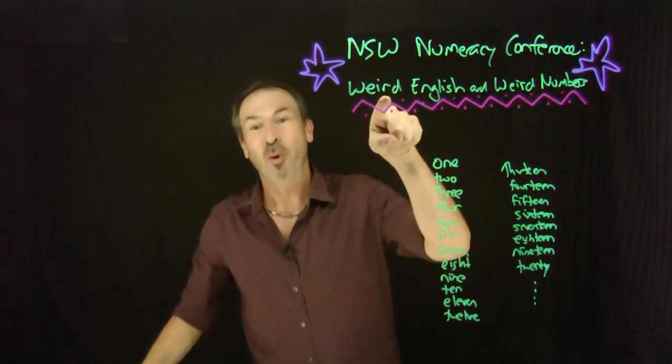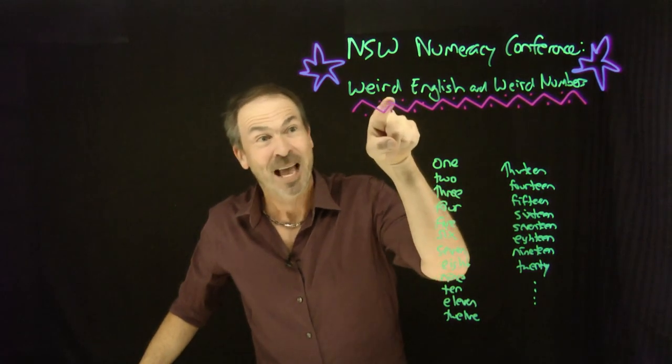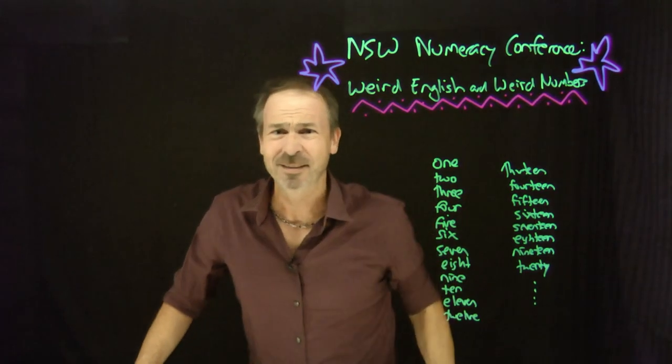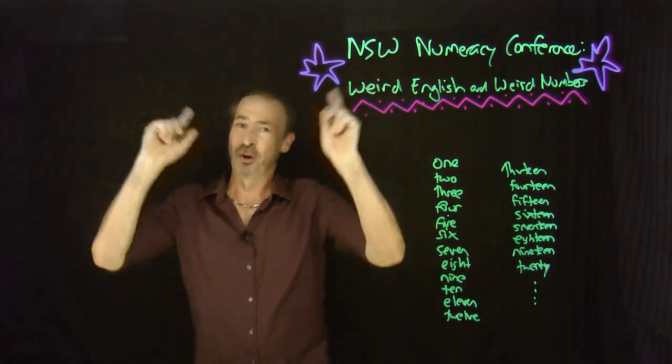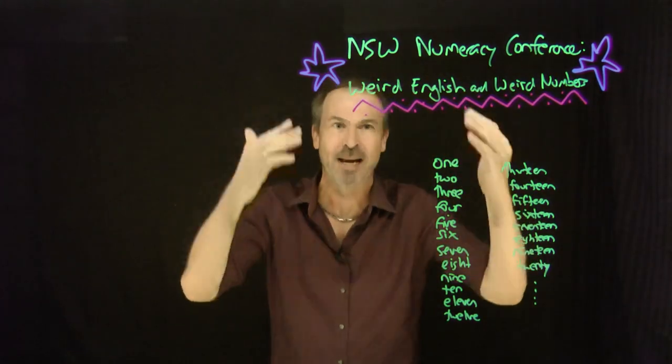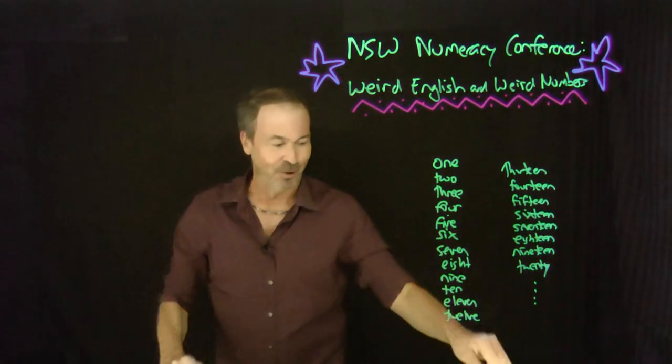The first thing to note: the word weird is weird. Have you noticed its spelling? Isn't it meant to be I before E except after C? The spelling of weird is weird. There's a lot of weird stuff going on. That's the theme today. Let's talk about numbers and how we think about and write numbers and how weird it all actually is and try to make sense of it all.